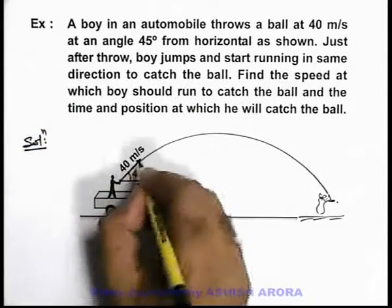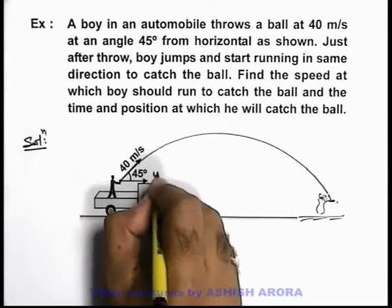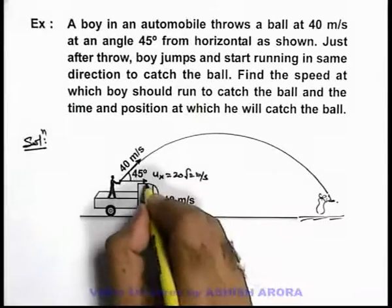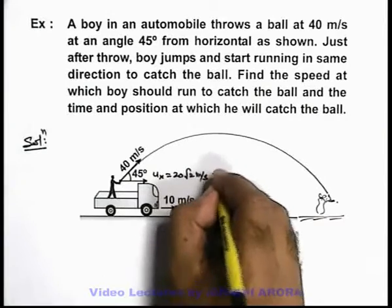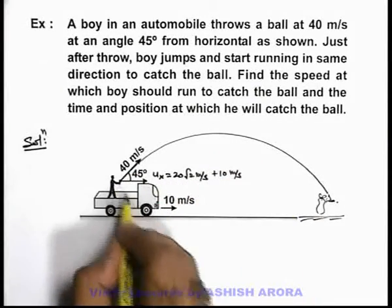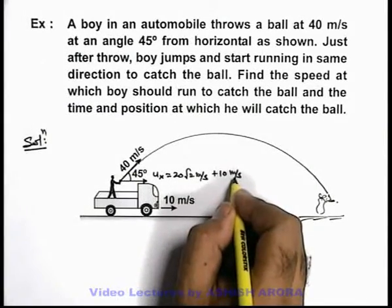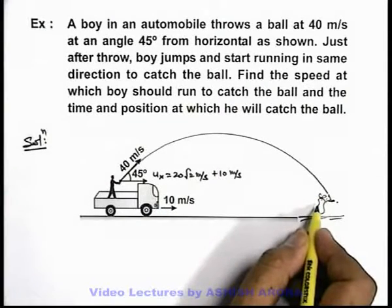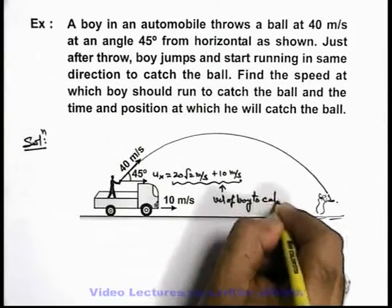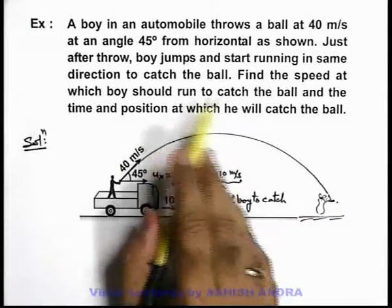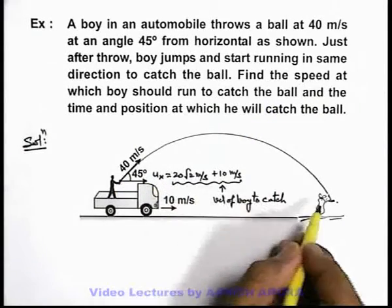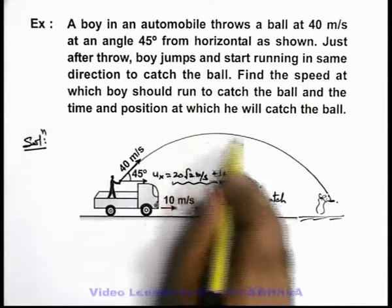When the ball is thrown at 40 meters per second, the horizontal velocity of ball ux can be written as 40 cos 45, which is 40 by root 2, equal to 20 root 2 meters per second. Plus the ball will have the speed of the automobile, so ux is 20 root 2 plus 10 meters per second — this is the net horizontal velocity of the ball with respect to the ground. So the boy must run at this same speed, 20 root 2 plus 10 meters per second, so that the horizontal distance covered by both is the same at the same time.